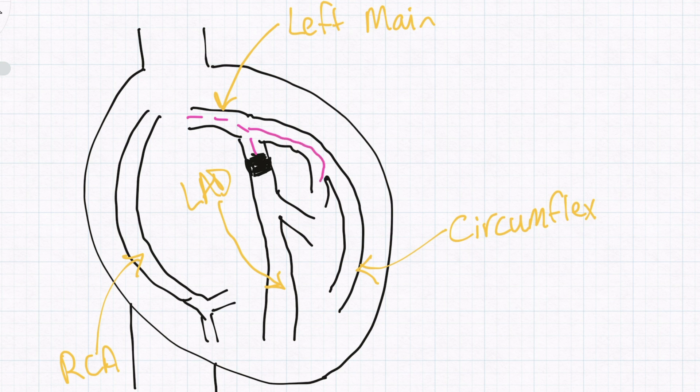the circumflex artery comes around the side of the heart, and the RCA or right coronary artery supplies the back side of the heart. These arteries are fed by their respective branches of the aorta.